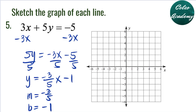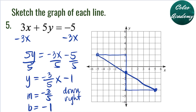To graph this, we begin with the Y-intercept negative 1. The slope is negative 3 over positive 5, which means 3 down and 5 units to the right. From negative 1, we go 3 down and 5 units to the right. You can also go 3 up and 5 to the left. Connect the 3 points to draw the line — this is the graph of Y equals negative 3 fifths X minus 1.